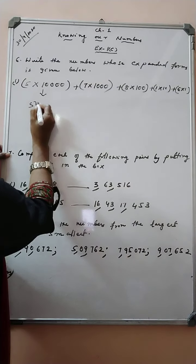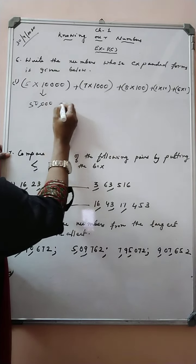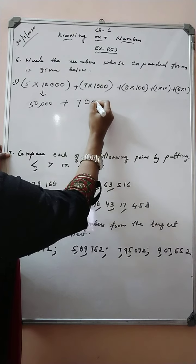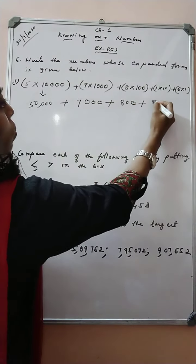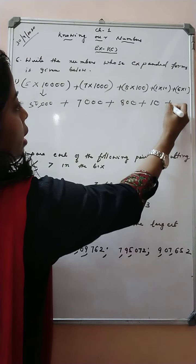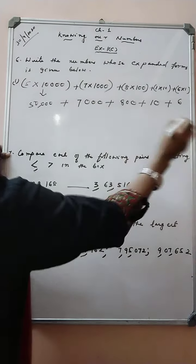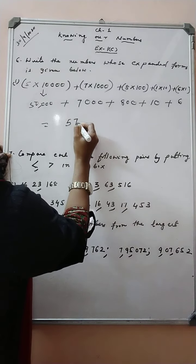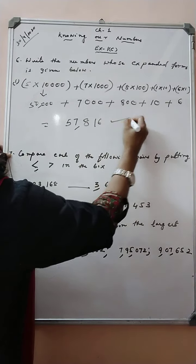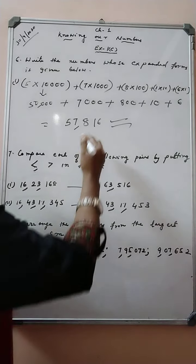5 into 10,000 it will be 50,000. 7 into 1000 it will be 7,000. 8 into 100 it will be 800. 1 into 10 it will be 10 and then 6 into 1 and then 6. If we sum up, we will get our number like 57,816. So, we got our answer.